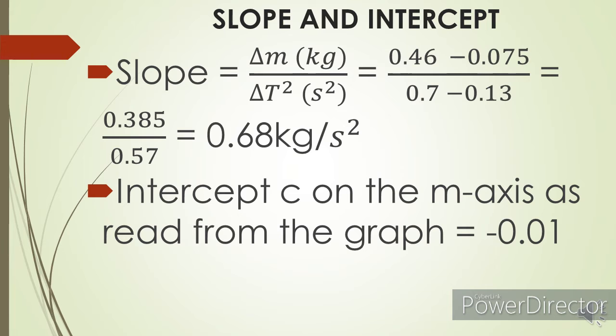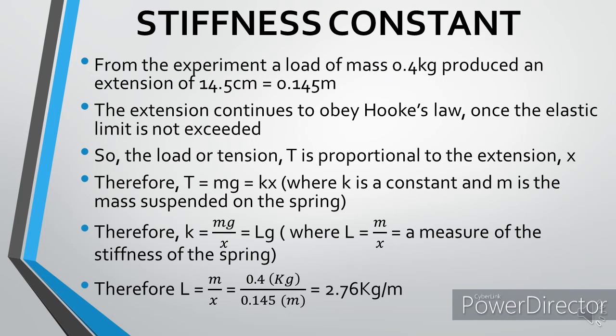So that's the value of my slope, while the intercept already mentioned is -0.01. So to get the stiffness constant, I used the mass of 0.4 kg. And after hanging the mass, the extension produced was 14.5 centimeters, which is equivalent to 0.145 meters. So I took note of that. And you know that from Hooke's law, once the elastic limit is not exceeded, the load will be directly proportional to the extension produced.